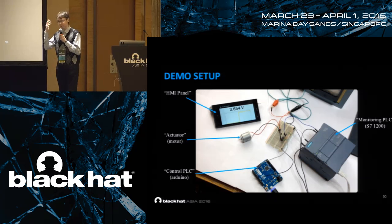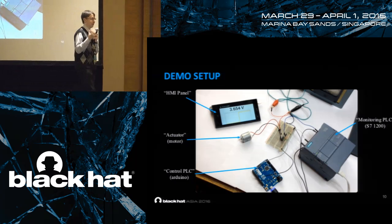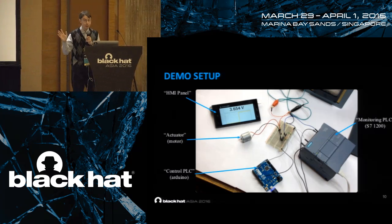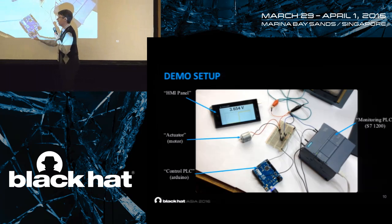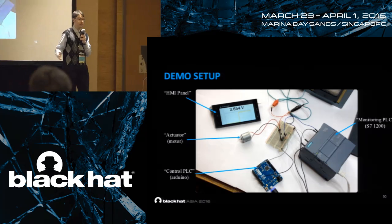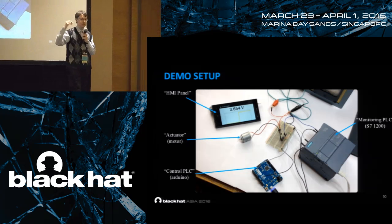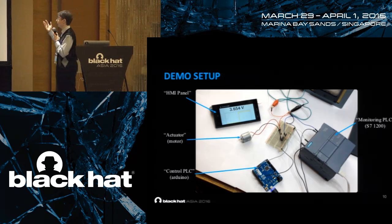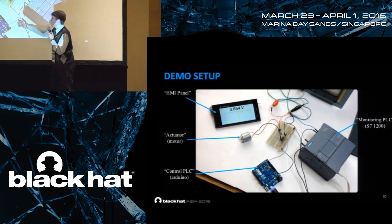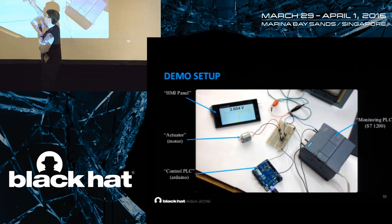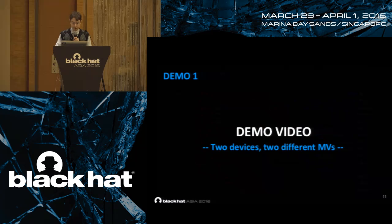I don't have much budget for this research. So instead of a real actuator, I used a small motor used in toys. It doesn't matter because its speed is controlled by an analog variable. The control PLC is emulated by an Arduino which pulse-width modulates the analog value of the signal. But what we are fooling is a real PLC used in real ICS infrastructure — one of the most popular PLCs, the Siemens S7-1200. This is the control PLC, this is the monitoring PLC, this is our actuator, and this is the S7 HMI panel shown on my phone. Let's see this demo.